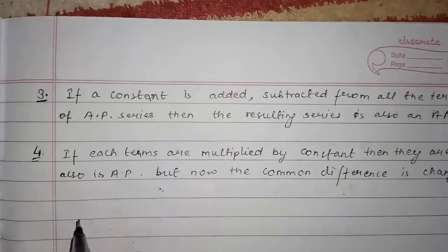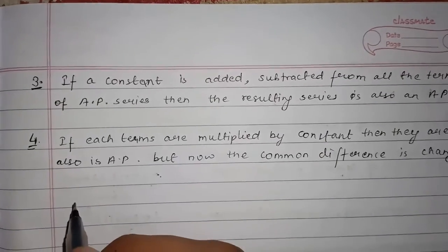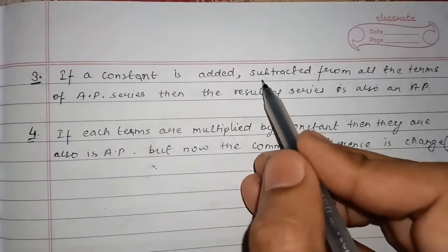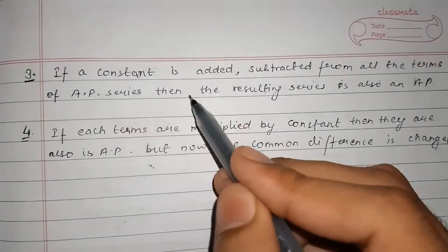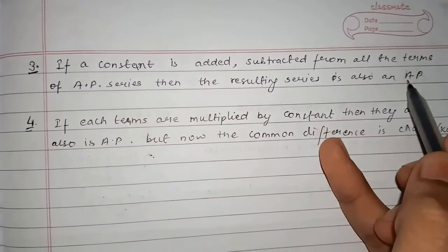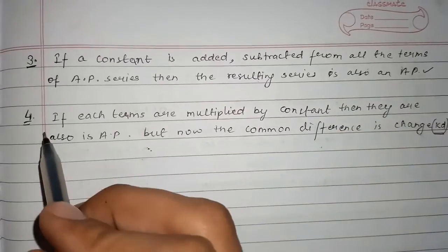Now rule number three is: if a constant is added or subtracted from all the terms of AP series, then the resulting series is also an AP.